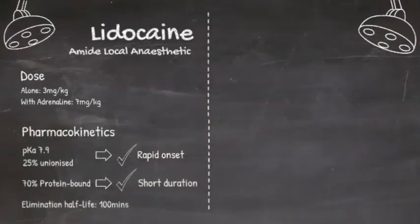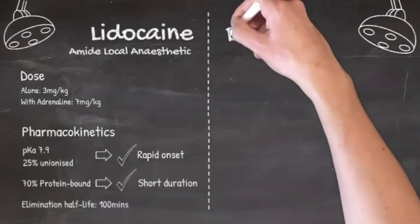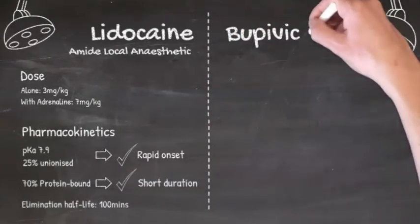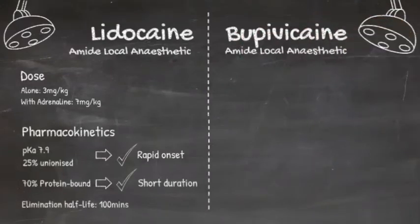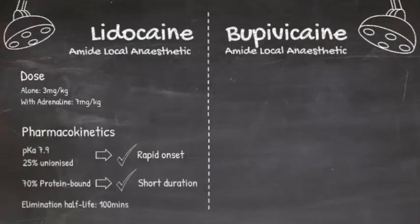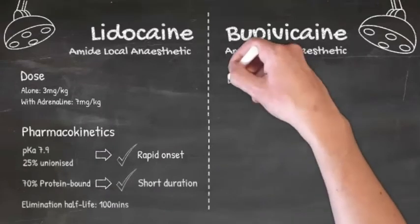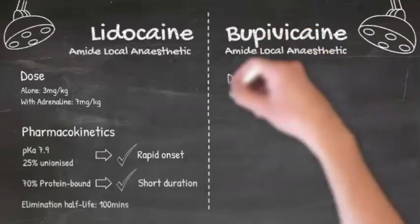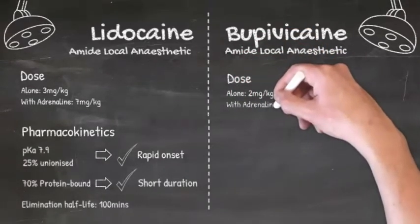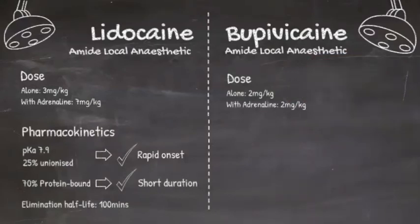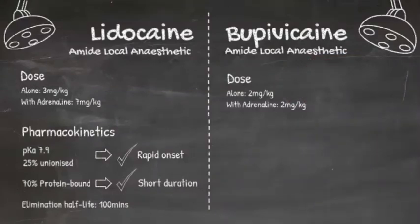Bupivacaine is also an amide local anaesthetic, but it is much more lipid soluble than lidocaine, making it 8 times more potent. Its maximum dose is 2mg per kg regardless of whether it is given with adrenaline or not.